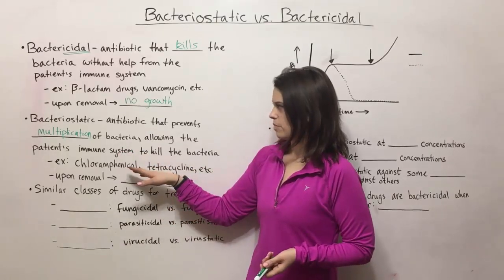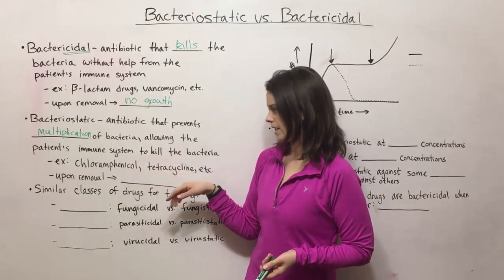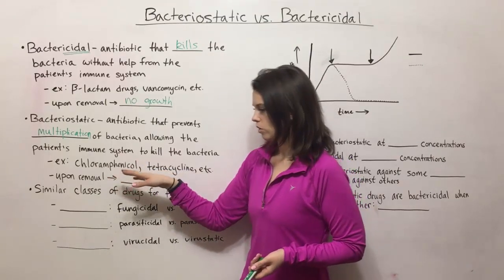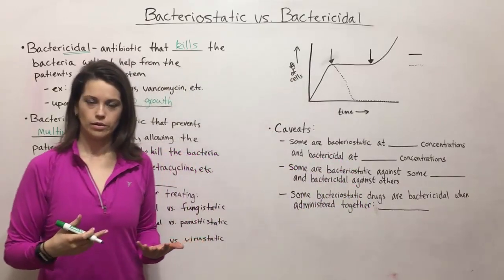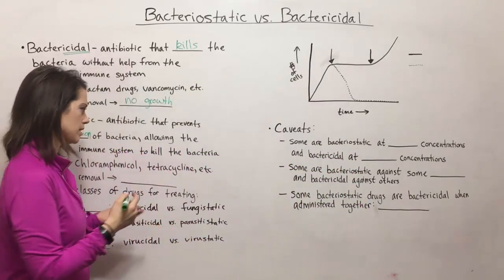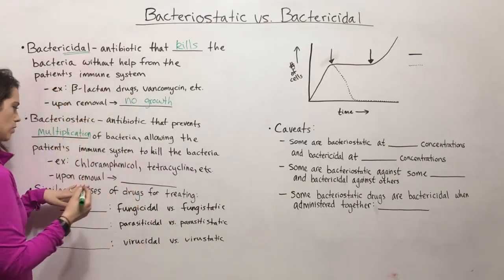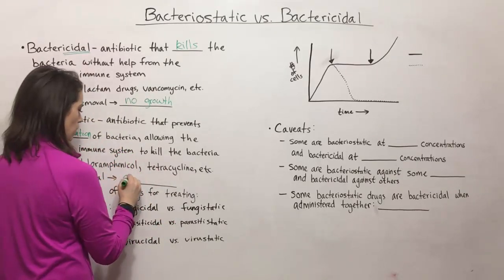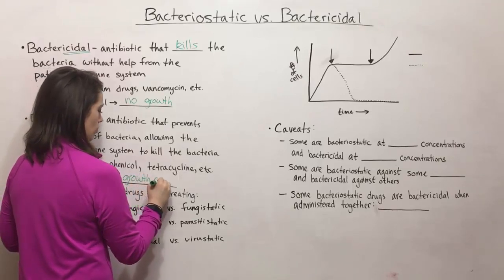Examples of bacteriostatic drugs include chloramphenicol and tetracycline. Upon removal, if there are still bacteria around that have not been taken care of by the immune system and the bacteriostatic drug is removed, then growth can resume.